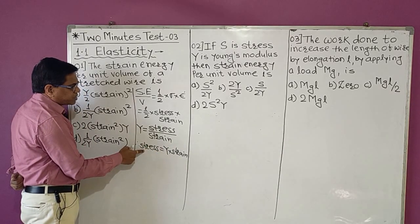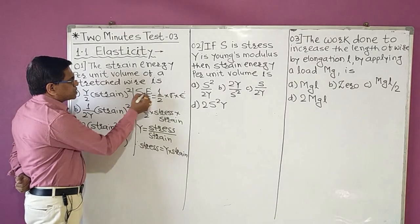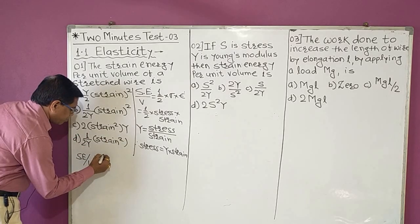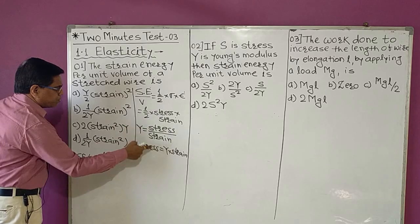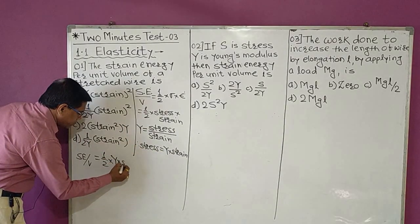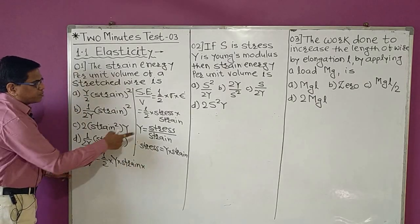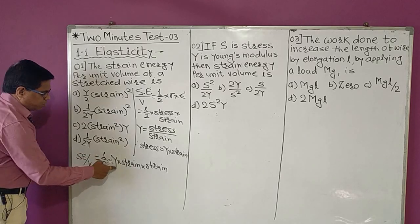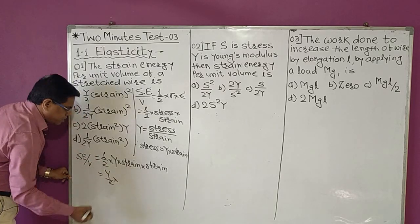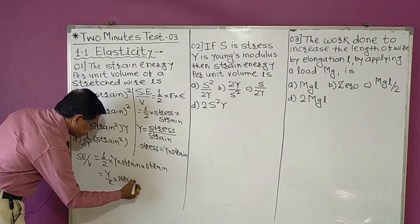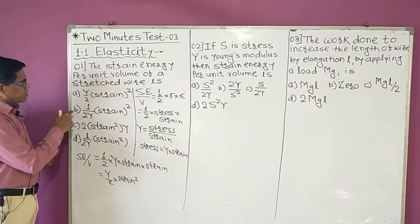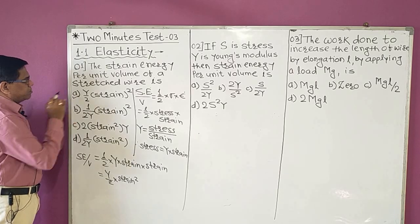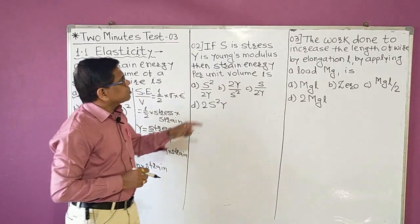Substituting stress = Y × strain into the strain energy formula, we get: strain energy per unit volume = (1/2) × Y × strain × strain = Y/2 × strain². Checking the options, option A is Y/2 × strain², so the answer to the first MCQ is option A.